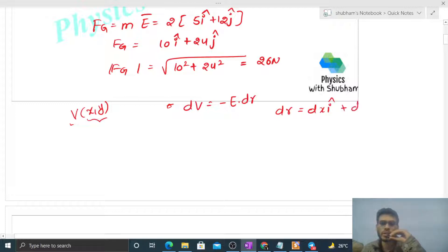Taking the dot product, i with i and j with j, we get dV = -(5dx + 12dy). This is the change in potential. To find potential, take integration on both sides.